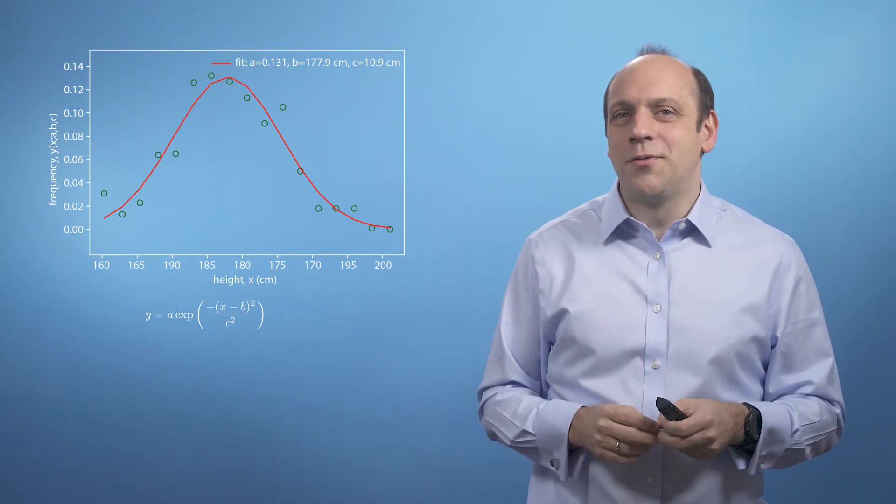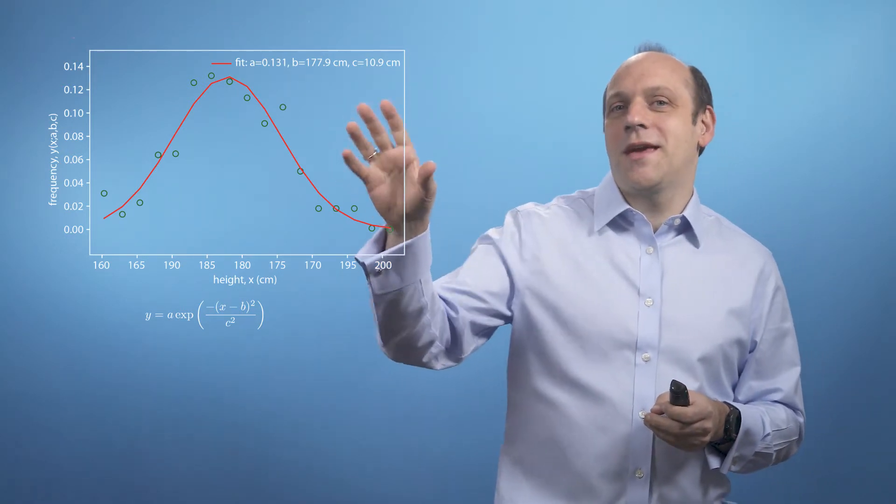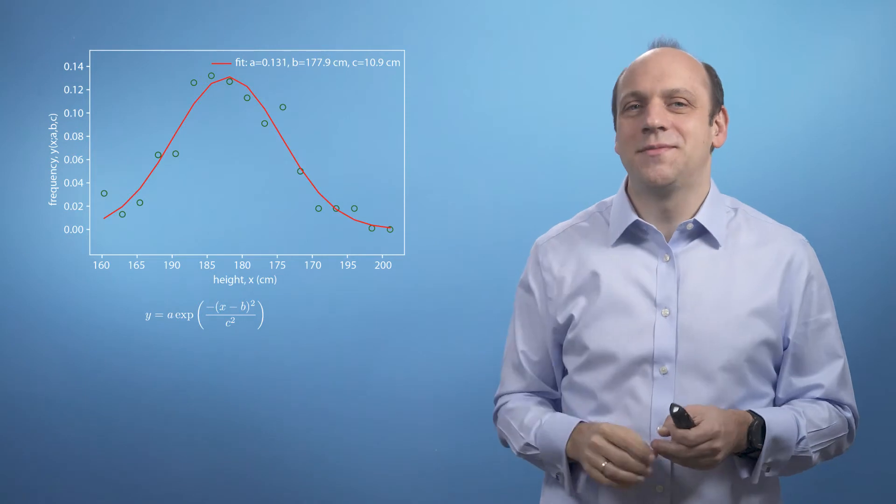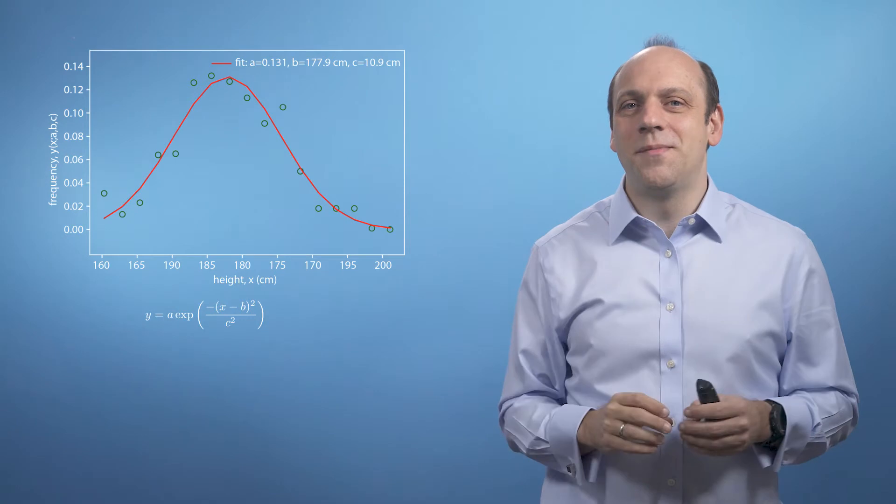Now it's useful at this point to think about why we need to have the starting guess. If we started with a guess here for the mean of 100 centimeters, the model curve wouldn't overlap with the data at all. So when we did a little move to b, we'd get no change.